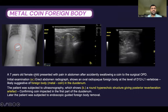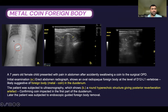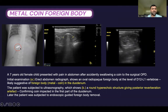A seven-year-old female child presented with pain in abdomen after accidentally swallowing a coin to the surgical OPD. Initial erect abdominal radiograph shows an oval foreign body at the level of D12-L1 vertebrae, suggesting a metal coin in the duodenum. Ultrasound shows a round hyperechoic structure giving posterior reverberation artifact, confirming the impacted coin in the first part of the duodenum, after which the patient was subjected to endoscopic removal of the foreign body.